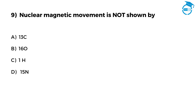Here is the next one. Nuclear magnetic moment is not shown by. Option A, 13C. Option B, 16O. Option C, 1H. Option D, 15N.